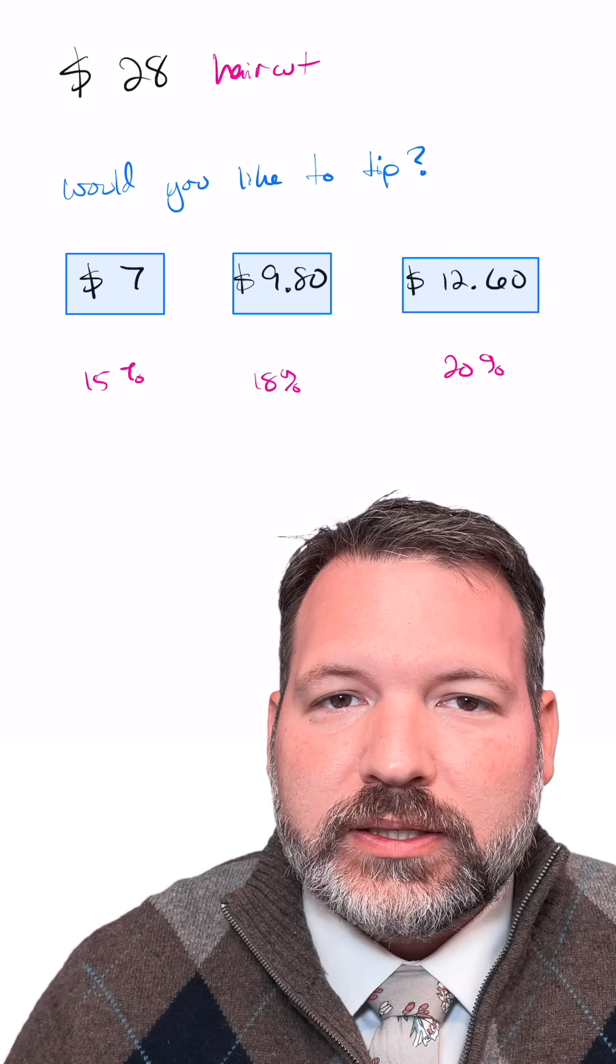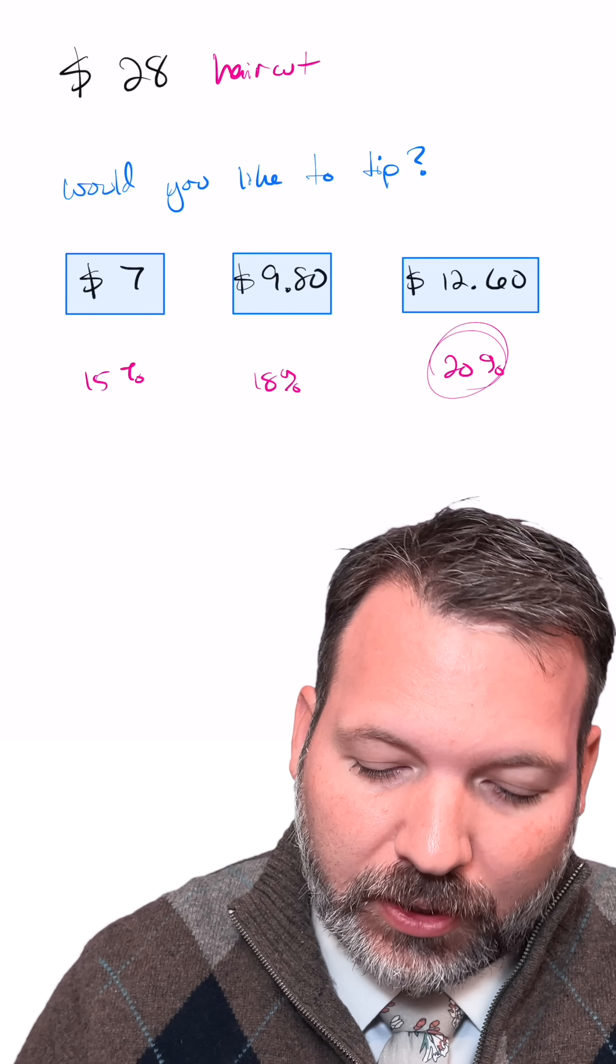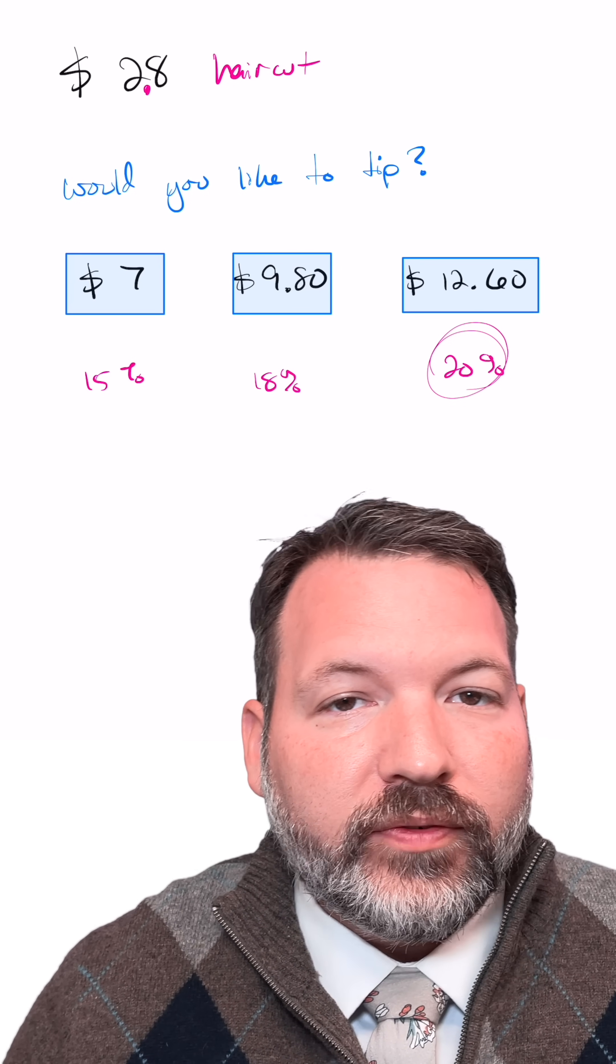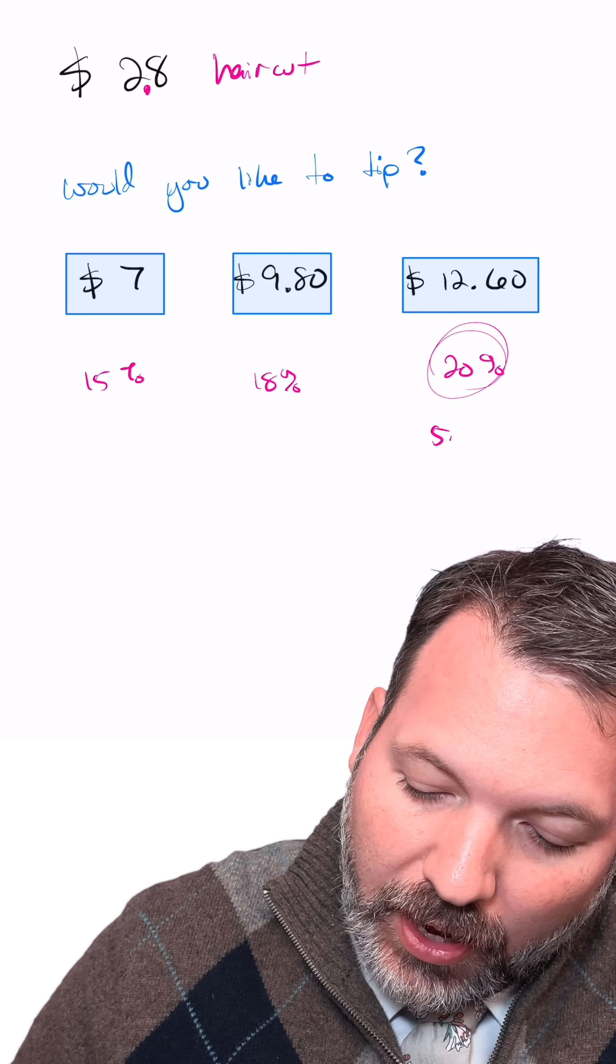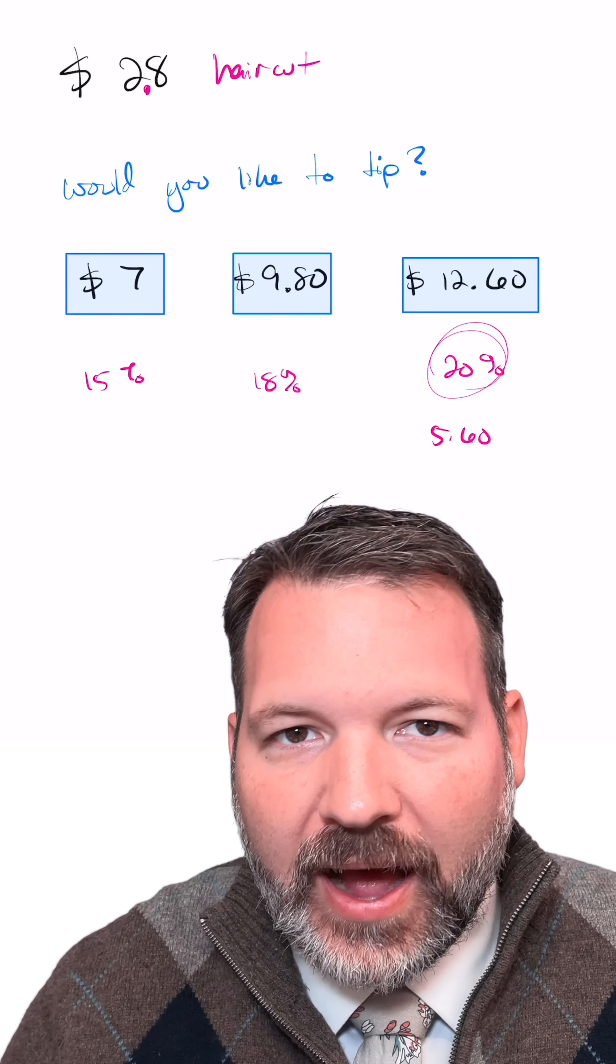Fortunately, I know a relatively simple trick for calculating something like 20%. You just take a tenth of whatever the number is, that is in this case $2.80, and you double it. A 20% tip should be $5.60.